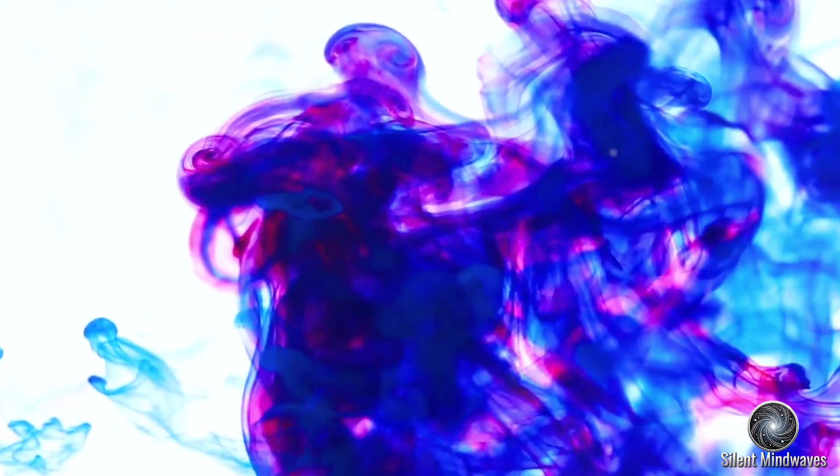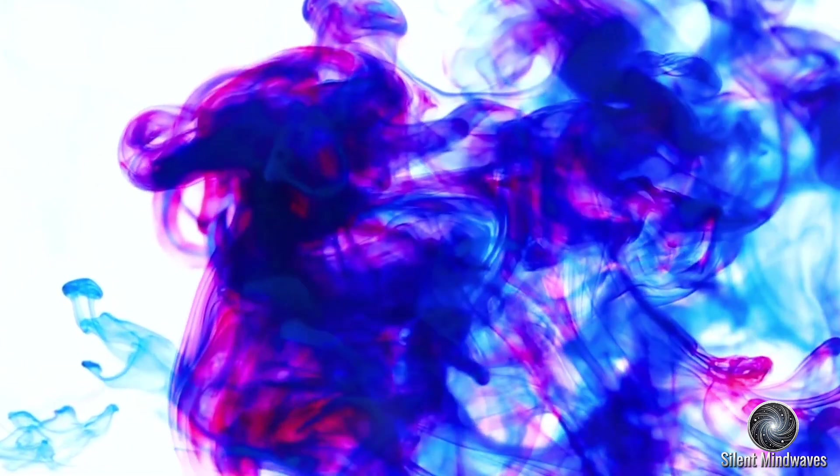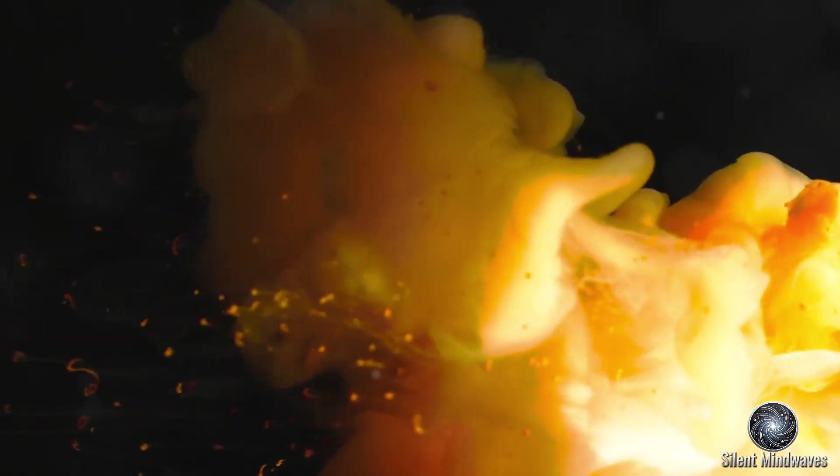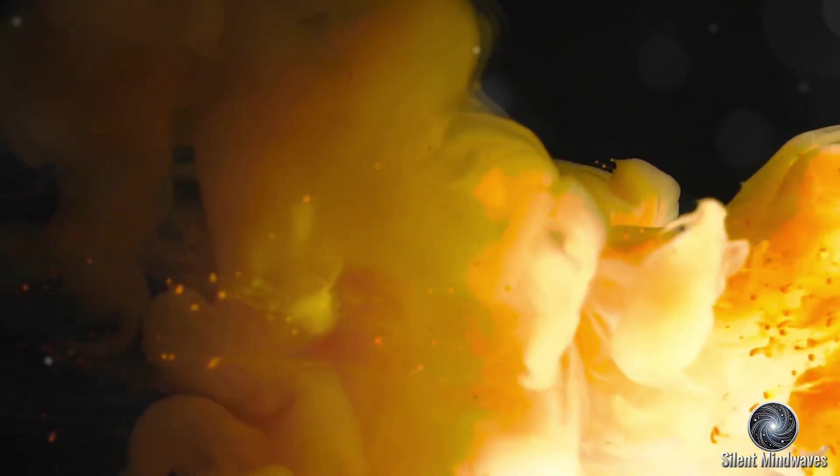However, over time the dye molecules spread out, eventually distributing themselves evenly throughout the water. This diffusion process is driven by the random motion of molecules seeking to reach a state of equilibrium. This process of diffusion, driven by the random motion of molecules, is a classic example of entropy in action. The even distribution of dye in water represents a higher entropy state.